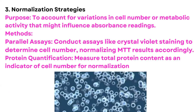Normalization strategies are used to account for variations in cell number or metabolic activity that might influence absorbance readings — to ensure MTT is showing proper, reliable absorbance. We can conduct parallel analyses such as crystal violet staining to determine cell number and normalize MTT results accordingly, or perform protein quantification by measuring total protein content as an indicator of cell number for normalization.